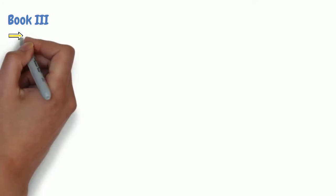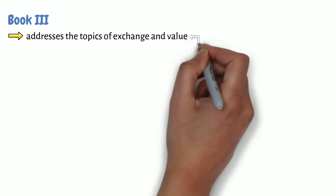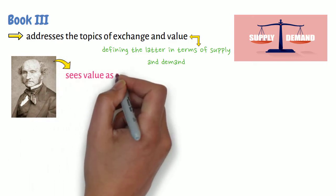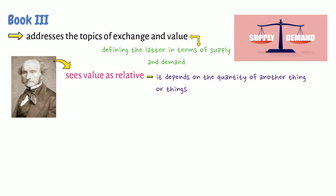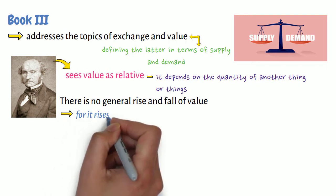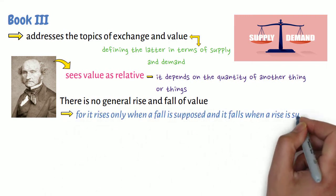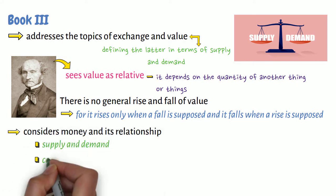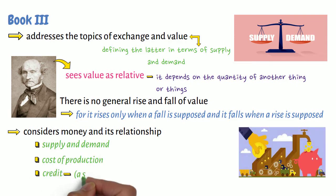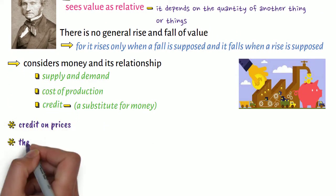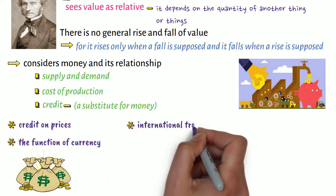In Book 3, Mill addresses the topics of exchange and value, defining the latter in terms of supply and demand. Mill sees value as relative, since it depends on the quantity of another thing or things. There is no general rise and fall of value, for it rises only when a fall is supposed and it falls when a rise is supposed. Mill considers money and its relationship to supply and demand, cost of production, and credit, which is a substitute for money. Further, he looks at the influence of credit on prices, the function of currency, international trade and values, and rates of interest.